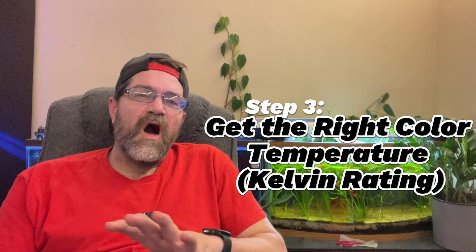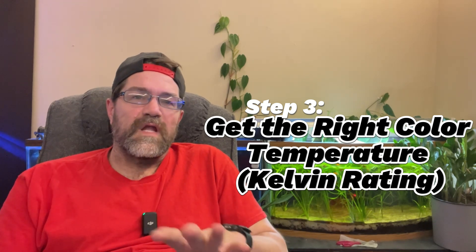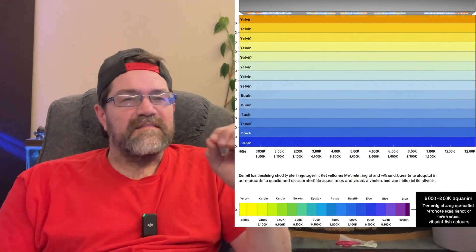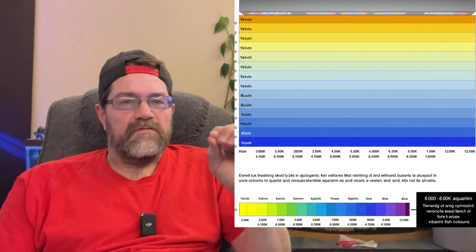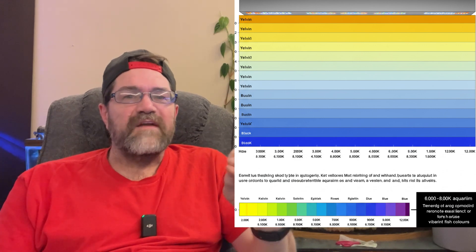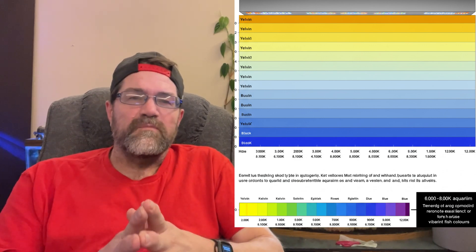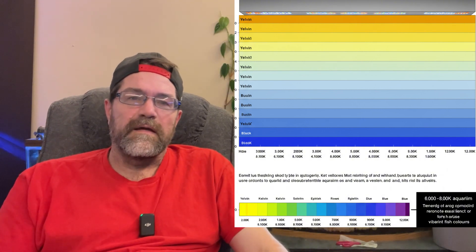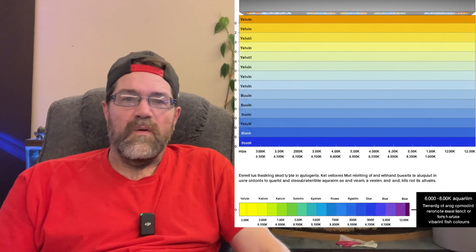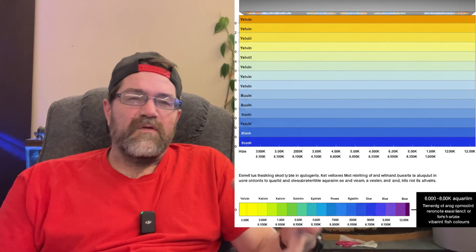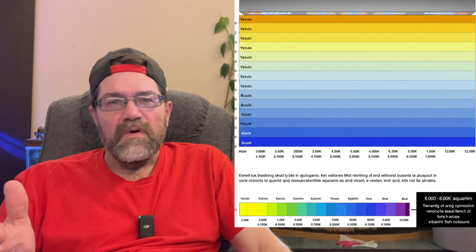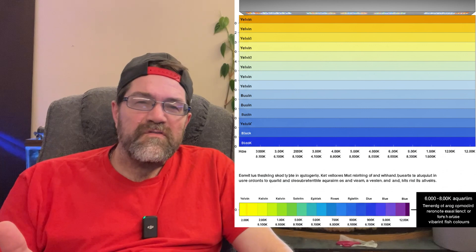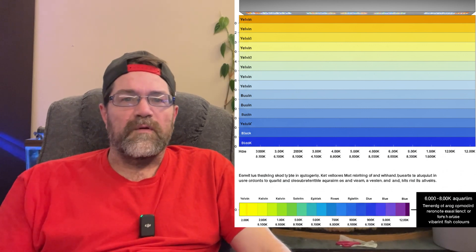Kelvin measures the color temperature of your light. For aquariums, the sweet spot is between 6,000K and 8,000K. This mimics natural daylight and provides a balanced spectrum that supports plant growth while still looking visually appealing. Avoid anything too yellow, like below 5,000K, or too blue, which is above 10,000K. These extremes can either promote algae growth or fail to support plant growth.